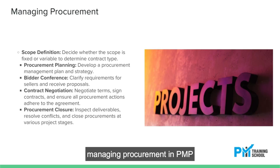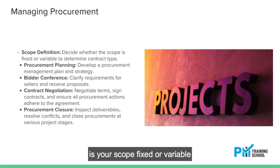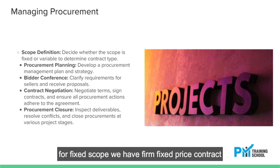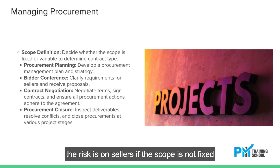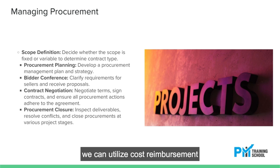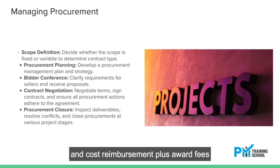Managing Procurement in PMP: Decide what you want to do — is your scope fixed or variable? For fixed scope, we have firm fixed price contract, fixed price incentive fees contract, and fixed price economic price adjustment. The risk is on sellers. If the scope is not fixed, we can utilize cost reimbursement, cost reimbursement plus incentive fees, and cost reimbursement plus award fees.